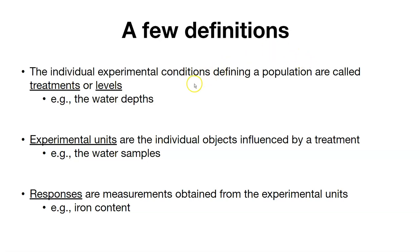First, we can say that the individual experimental conditions that define a population are called the treatments, or levels. In our case, this is the different water depths from 0 to 100 feet.